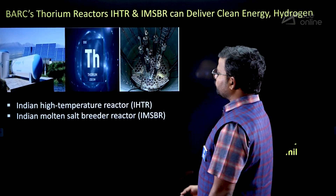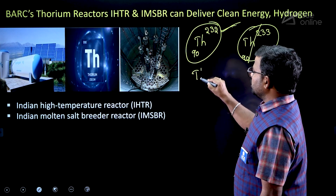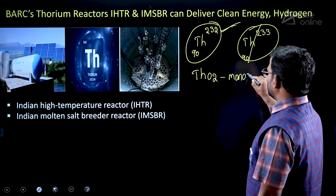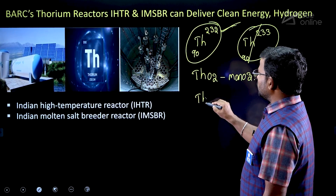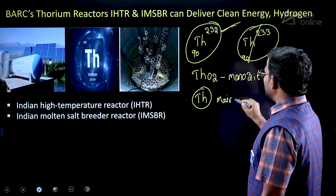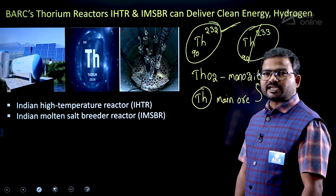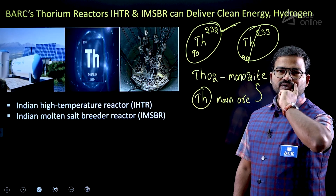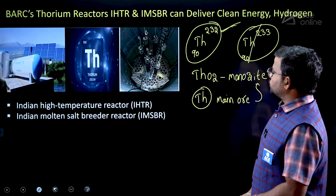Thorium occurs naturally in the form of thorium oxide, which is found in the mineral called monazite. So the main ore of thorium is monazite. This was asked in the UPSC 2022 prelims and Group exams — monazite as the main ore of thorium is a very important concept.